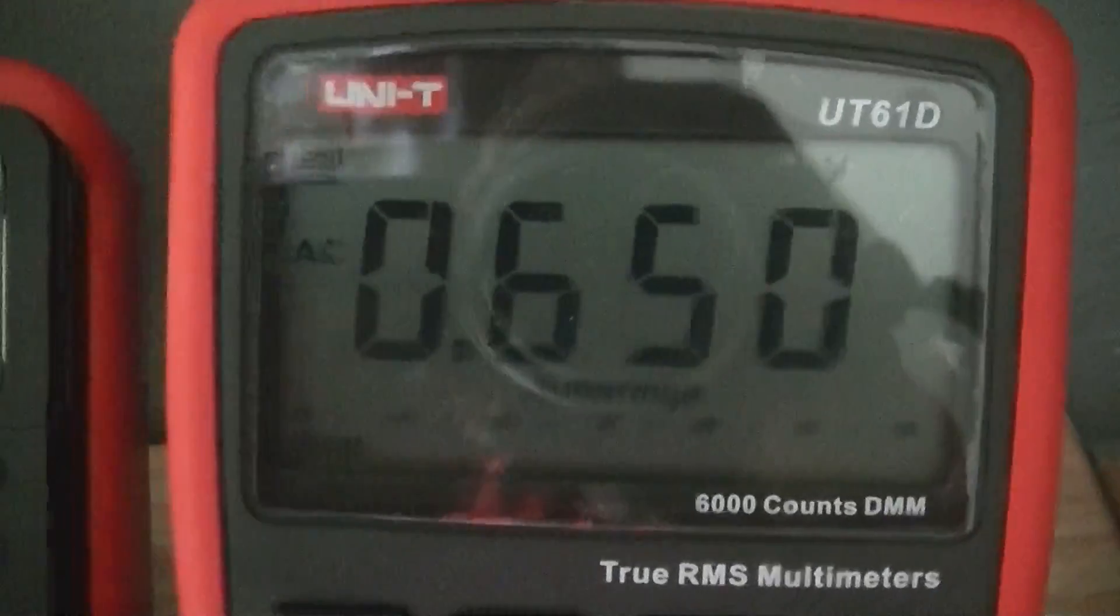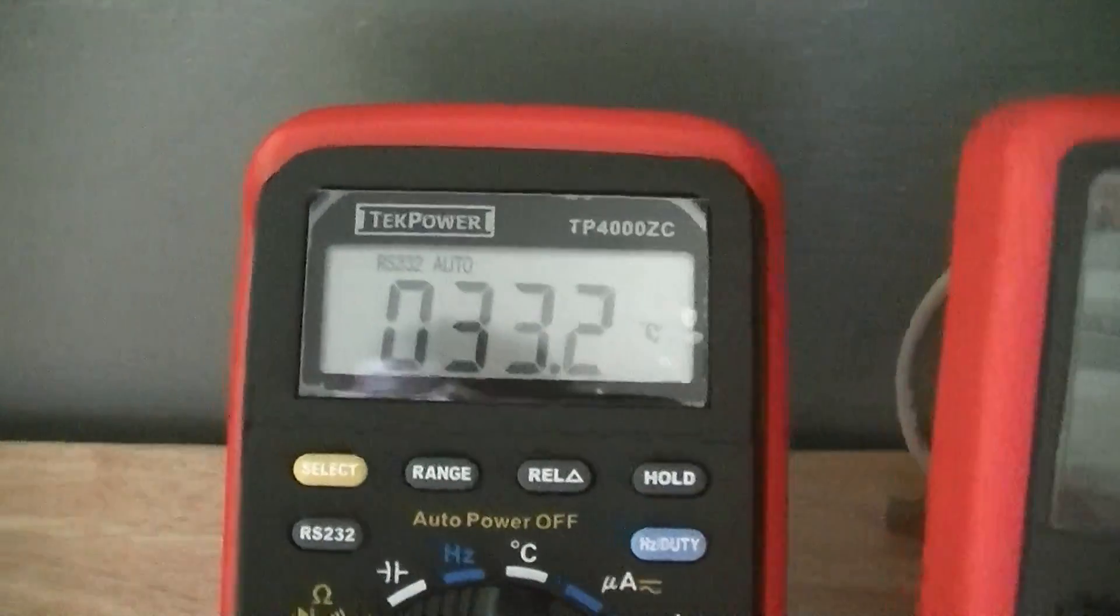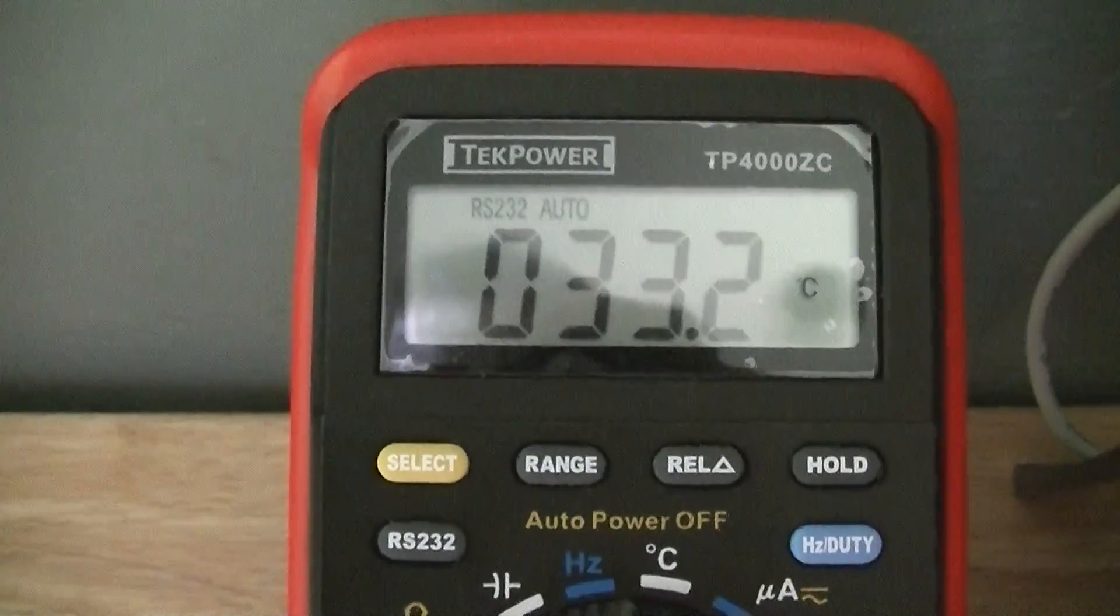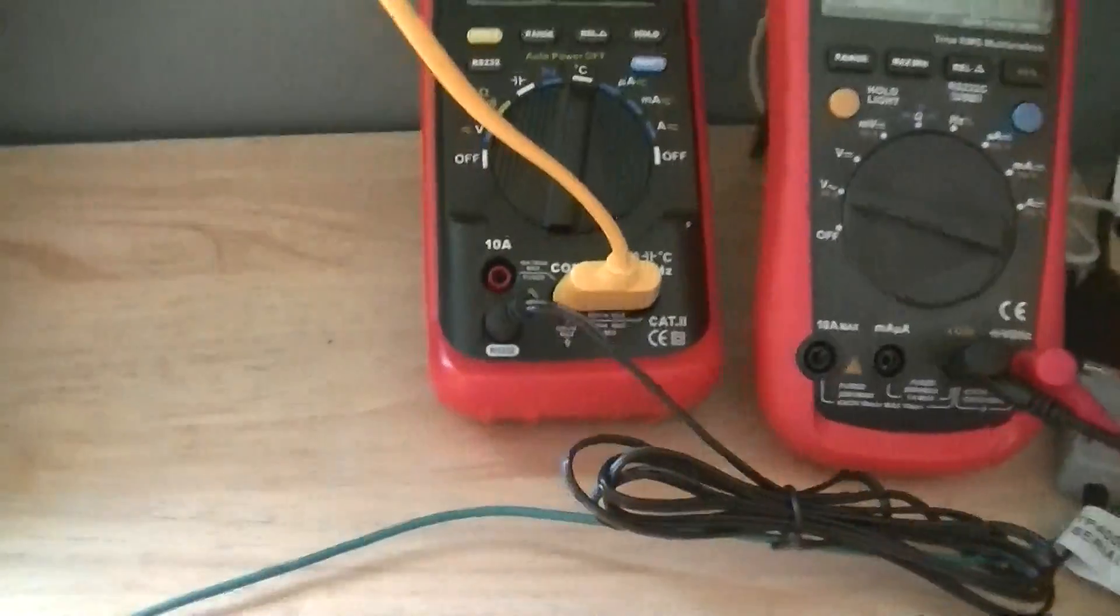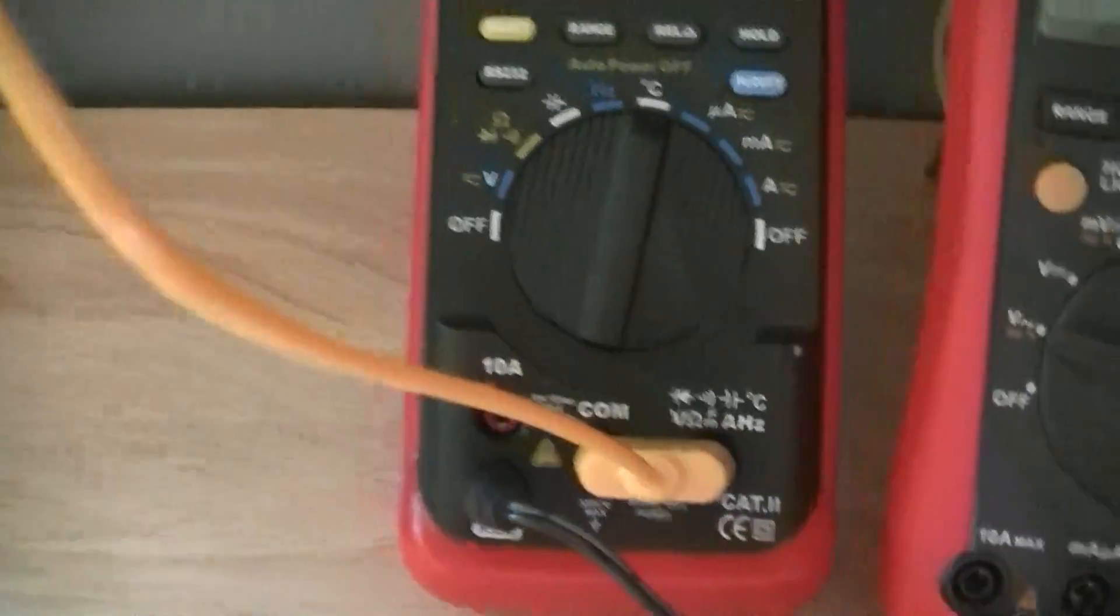We've got two very interesting multimeters that are logging our values for stray voltage. I'm going to start with this one on the left, and this yellow lead coming out of it goes out through the window, and out there is the temperature probe.